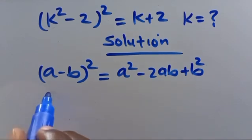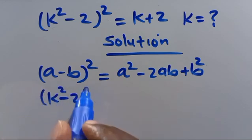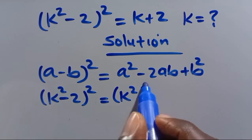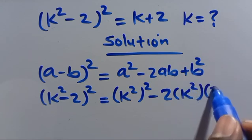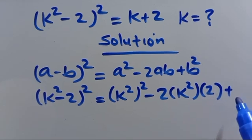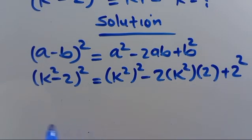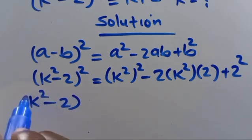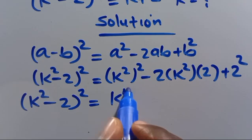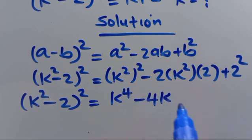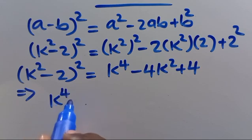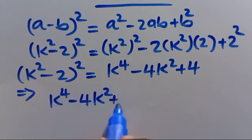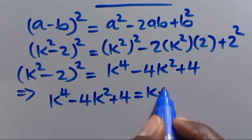So likewise, when we expand (k² - 2)², we get k⁴ minus 2 times k² times 2, plus 2², which gives us k⁴ - 4k² + 4. Substituting, we have k⁴ - 4k² + 4 = k + 2.